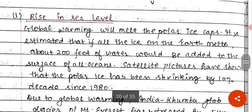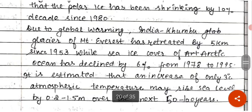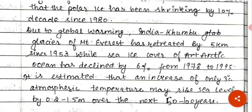The effects of global warming include a rise in sea level. The polar ice caps are melting, and it is estimated that if all the ice on earth melts, about 200 feet of water would be added to all ocean surfaces. The Khumbu Glacier of Mount Everest has retreated by 5 km since 1953, and the sea ice cover of the Arctic Ocean has declined by 6%. An increase of only 3 degrees Celsius may raise the sea level by 0.2 to 1.5 meters in the coming 50 years.